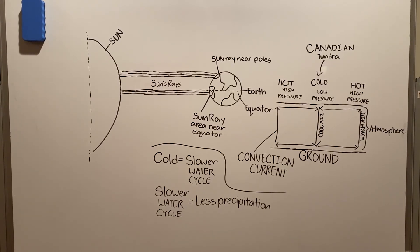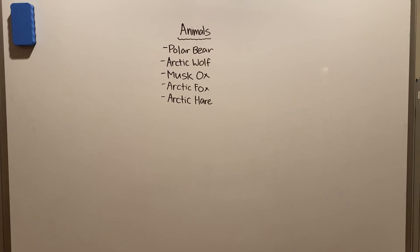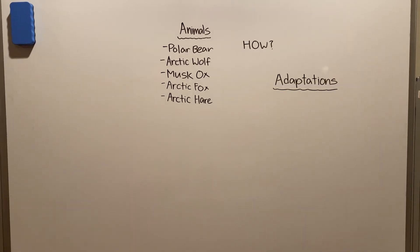Now we know the conditions of the area, let's learn about the animals that inhabit this frigid, dry land. You may think that animals probably could not adapt to such harsh conditions, but there are some. Here are some organisms that live in this area. But how? It has to do with their adaptations.